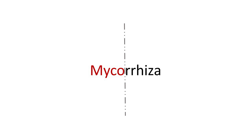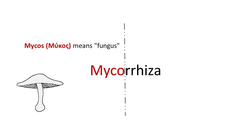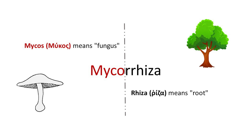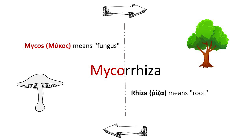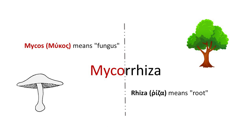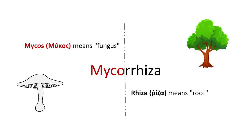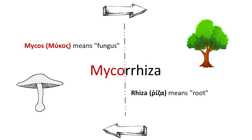The term mycorrhiza originates from Greek, combining two words: mycos, translating to fungus, and rhiza, translating to root. Therefore, the composite term mycorrhiza can be understood as fungus root, conveying the symbiotic connection between fungi and plant roots in this specific association.